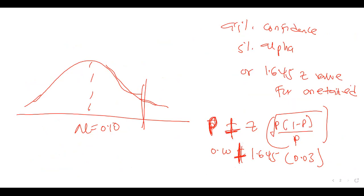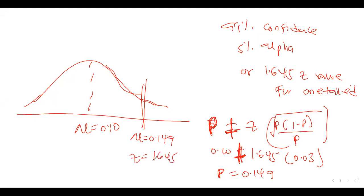When you compute that, you get 0.149. So the maximum allowable proportion is 0.149, which corresponds to a z of 1.645.